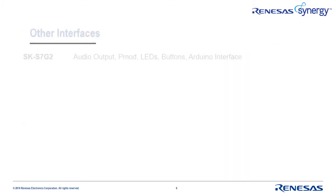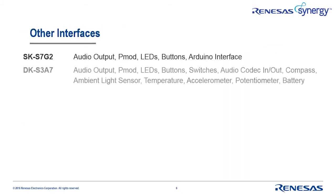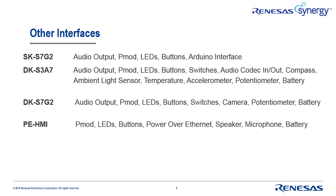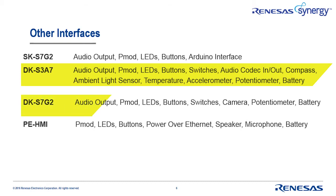A variety of other interfaces are available too, including an Arduino interface, a range of audio and video capabilities, and the previously mentioned PMOD interfaces. Notice that the DK S3A7 includes several sensor interfaces, so if your target requires a range of sensors, the DK S3A7 might be the best fit for your design. The DK S7G2 has a camera interface, so if video processing is a requirement, it might be a good choice. Look over all these comparisons carefully when selecting the best kit for your application.